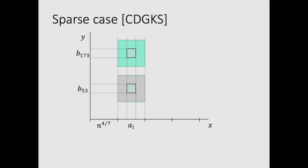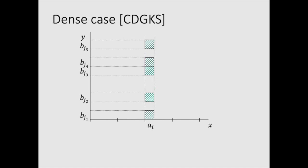Of course, there is a problem with this technique if we actually pick a bad ai. So that's what we call dense case. And in that case, actually, you just get too many candidates for this little a sub i.